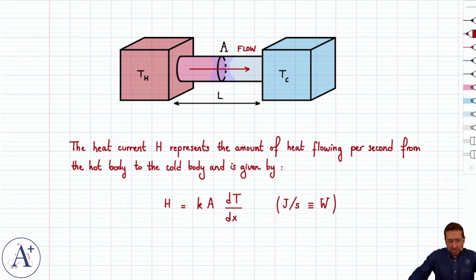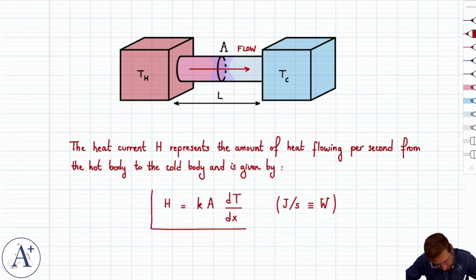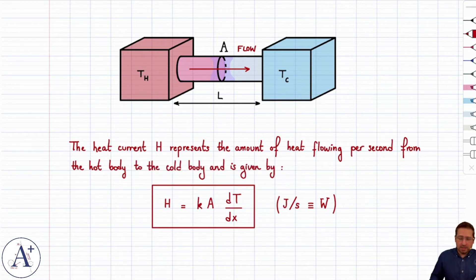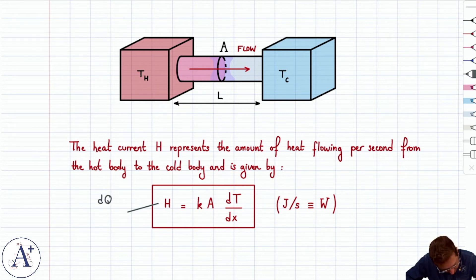What we'll do is define the heat current, H, which is the amount of heat flowing per second from the hot body to the cold body. So it's really the rate at which heat transfers, DQ DT. That's called the heat current.